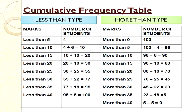For more than, we use lower limits: more than 0 = 100. More than 5: 100 − 4 = 96. More than 10: 96 − 6 = 90. More than 15: 90 − 10 = 80. More than 20: 80 − 10 = 70. More than 25: 70 − 25 = 45. More than 30: 45 − 22 = 23. More than 35: 23 − 18 = 5. More than 40 = 0.